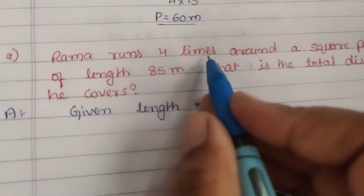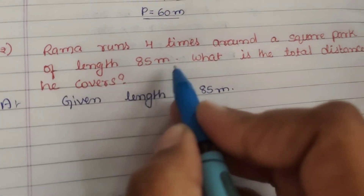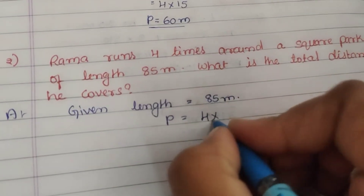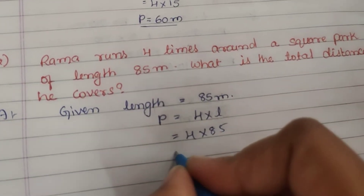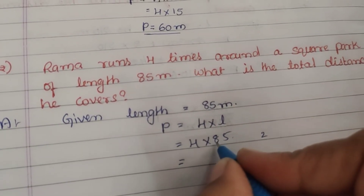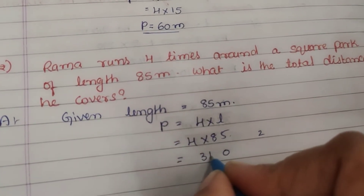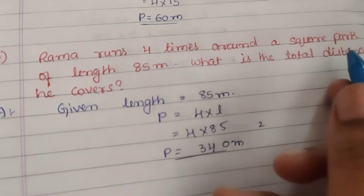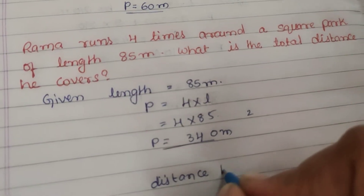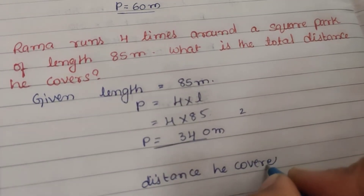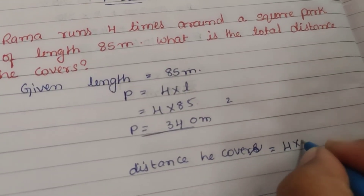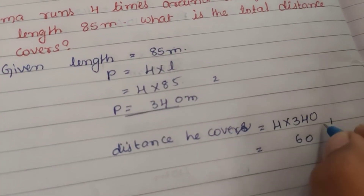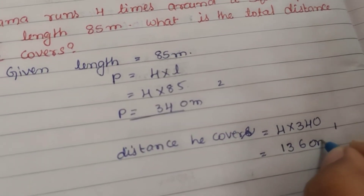Second question: Rama runs 4 times around a square park of length 85 meters. What is the total distance he covers? Given: length is 85 meters. Perimeter is equal to 4 into 85. 4 fives are 20, carry 2, 4 eights are 32 plus 2 is 34, so the perimeter is 340 meters. He runs 4 times, so the distance he covers is 4 into 340. 4 zeros are 0, 4 fours are 16, carry 1, 4 threes are 12 plus 1 is 13, so he covers 1360 meters.